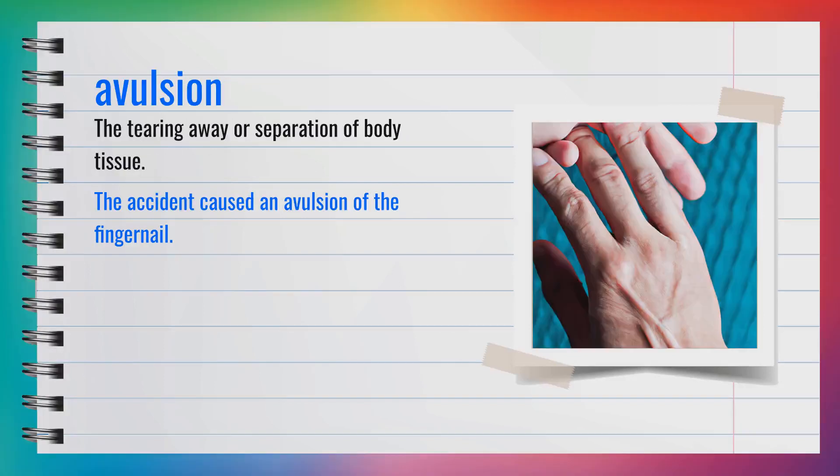The word avulsion, spelled A-V-U-L-S-I-O-N, is a noun. It means the tearing away or separation of body tissue. For example, the accident caused an avulsion of the fingernail. In summary, avulsion means a tear or separation of tissue.